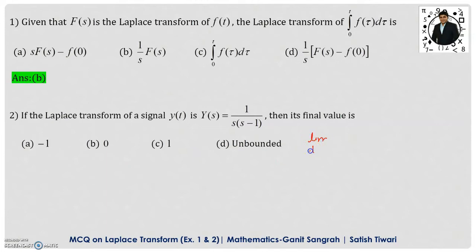It is limit t tending to infinity of f of t, and that will be given by limit s tending to 0, s into f of s. To find out the final value for this one, we find the RHS part: limit s tending to 0. Since we already have the function of s, we will not convert this into the function of t and calculate this limit.